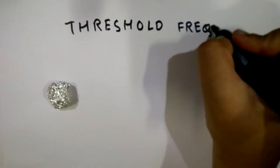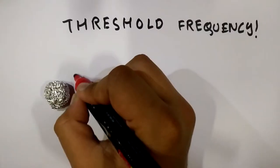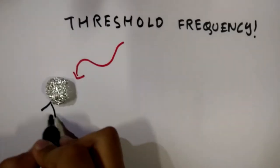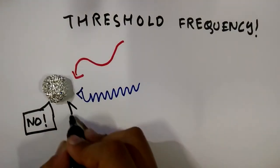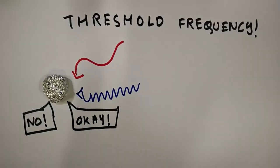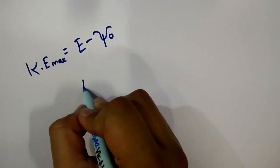Einstein also concluded that each metal has a threshold frequency. That is the minimum frequency of light that is required for the electrons to be emitted from the surface of the metal. Consequently, Einstein developed equations and the mystery was solved at last.